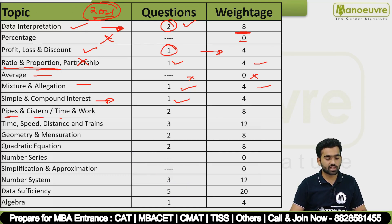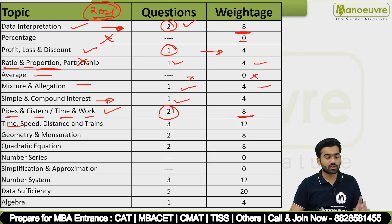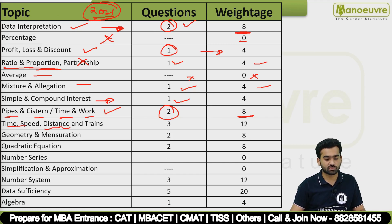Pipes and Systems and Time and Work each had 1 question, totaling 2 questions for 8 marks. Time, Speed, and Distance had 3 questions — one on trains, one on general speed-distance — totaling 12 marks. This is clearly the most important topic.